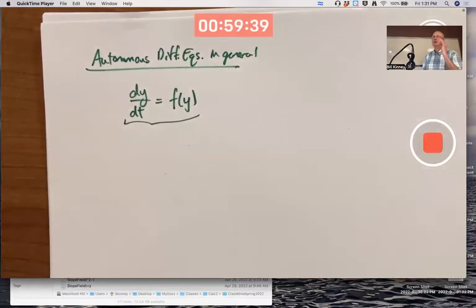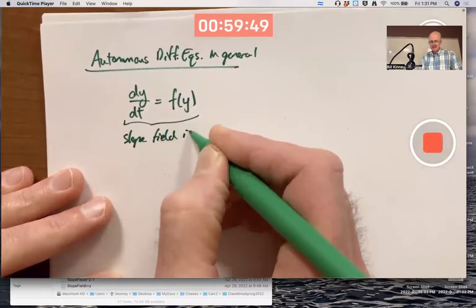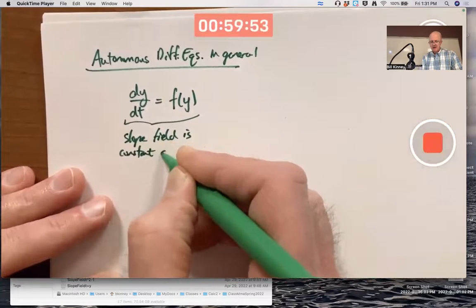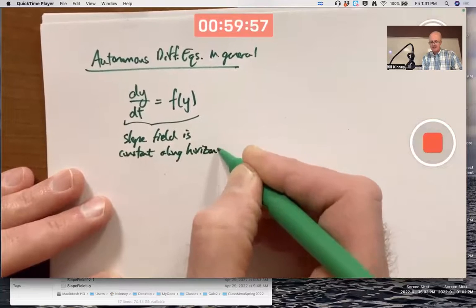The first thing to remember here is that the slope field is going to be constant along horizontal lines. Slope field is constant along horizontal lines. Why?